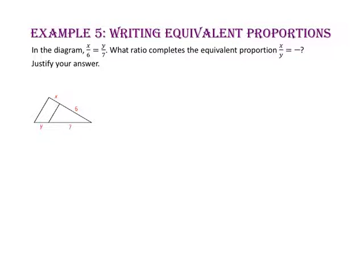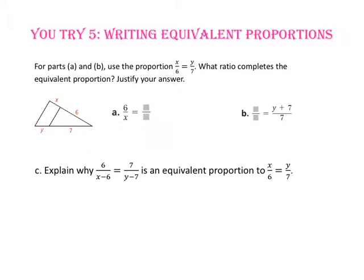Notice that no matter which way I choose to write the proportion, in every single one of them, when using the cross product property, I am multiplying my height and Leia's weight and setting that equal to my weight and Leia's height. In example 5, we will write equivalent proportions. In the diagram, x to 6 equals y to 7. What ratio completes the equivalent proportion x to y equals blank, and justify your answer? Since our new ratio starts with the comparison of the numerators x to y, our second ratio will start with the comparison of the denominators 6 to 7. This comes from our second property of proportions, where we switch the means.